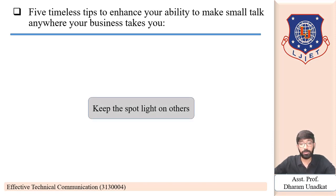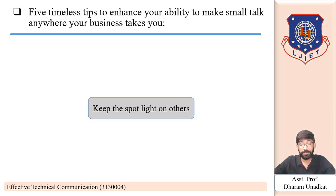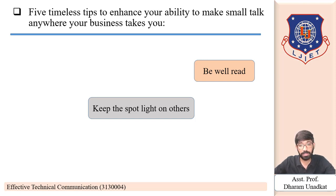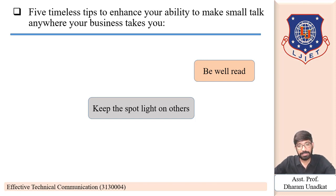Here are five timeless steps to ensure your ability to make small talk anywhere your business takes you. First, keep the spotlight on others — be genuinely interested in them; it's about them, not you. Get the other person talking by asking open-ended questions using who, what, when, where, how, and why. Ask about their job, or if they are new in town, ask where they previously lived or worked. People will think you are fascinating if you get them to talk about themselves. Second, be well read — read about a variety of subjects online or in print. Current events, sports, music, culture, and movies are great small talk topics.